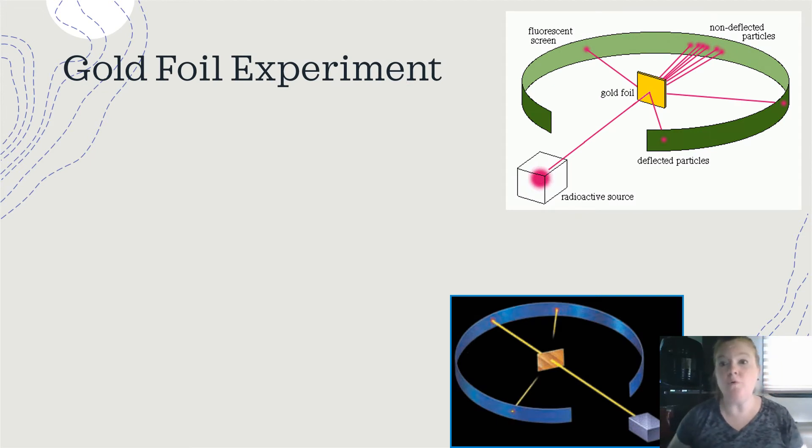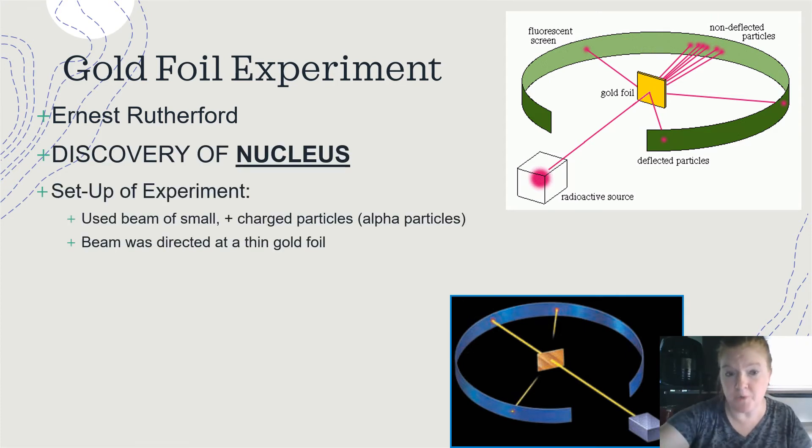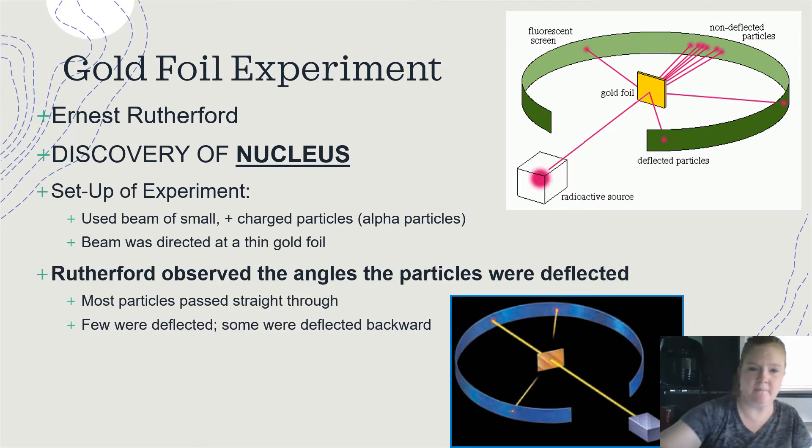Next experiment, gold foil experiment. Okay, so this was Ernest Rutherford, which led to the discovery of the nucleus. So the setup of the experiment, use a beam of small positively charged particles called alpha particles, and the beam was directed at a thin gold foil. Here's what Rutherford expected. Shine a beam of particles at gold foil, they will bounce back. But holy, that was not what happened. Rutherford observed the angles, the particles were deflected. But what happened was most of the particles literally went through. So imagine you just ran at a wall and ended up on the other side. Whoa, sort of like, really? Rutherford struggled with this at first. Why? Why did this happen?